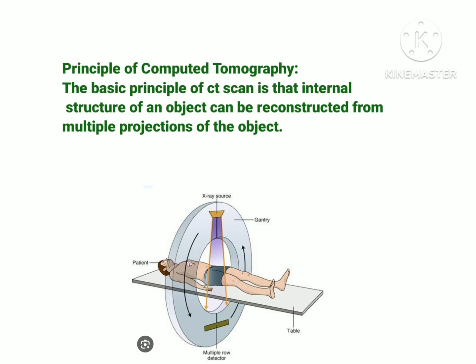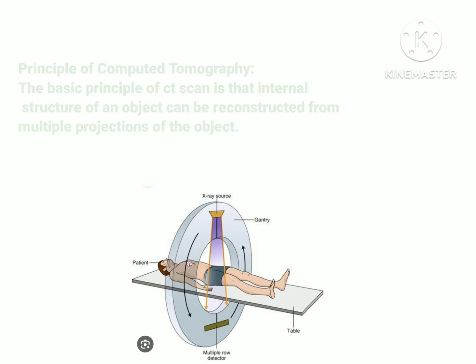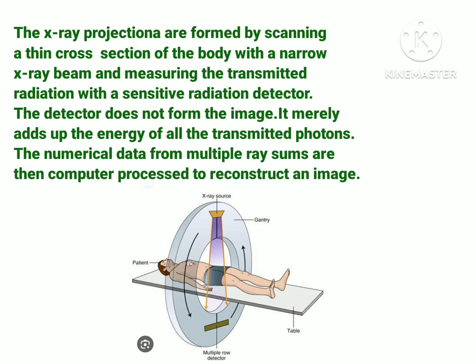The basic principle behind CT scan is that the internal structures of an object can be reconstructed from multiple projections of that object. For example, if an object like a head is under examination, it can be examined from different sides, and each part of the head is reconstructed into a slice or image. Just as an x-ray machine has an x-ray tube and detector, CT scan also has an x-ray tube and detectors.